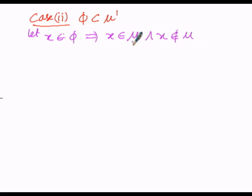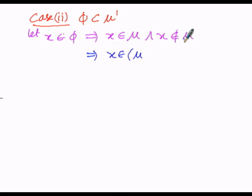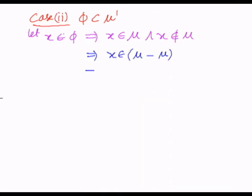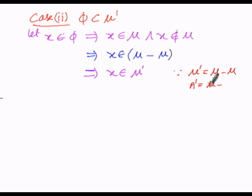Here x belongs to the universal set μ and does not belong to μ, therefore we get the empty set. In the next logical step, x is present in μ but does not belong to μ, so we can subtract this μ. We know A dash equals μ minus A, so μ dash equals μ minus μ. Therefore instead of μ minus μ we can replace it by μ dash, which implies x belongs to μ dash.